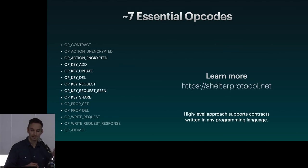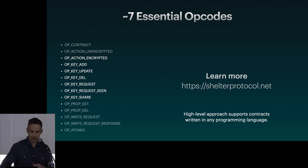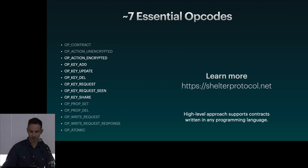Those are the seven essential opcodes for doing end-to-end encryption in Shelter Protocol. We have a few other opcodes: OPPropSet and OPPropDel set and delete properties, which are key-value pairs on contracts useful for implementing additional features. OPWriteRequest and OPWriteRequestResponse request permission to write to a contract. And finally OPAtomic, which allows you to bundle multiple opcodes into a single opcode and have all of them execute at once.